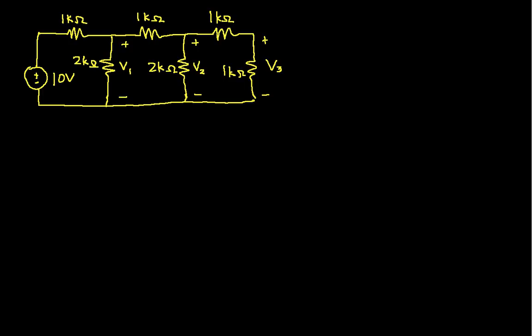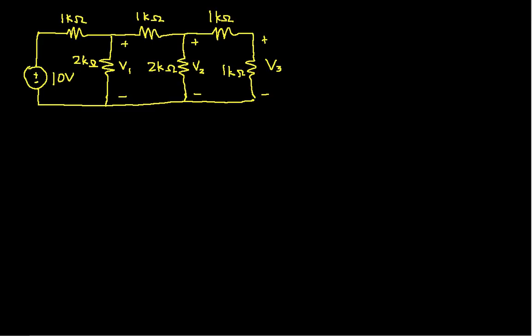I've drawn here a ladder network and my goal is to find the voltage V1 across this resistor, V2, and V3. So I'd like to know all of those voltages. I might also want to know the current that the source has to supply to this ladder network. Now for this particular circuit, if you look at it, there's no obvious way that we could apply a voltage divider to find V1, V2, or V3 — no obvious techniques that have already been talked about that we should use directly.